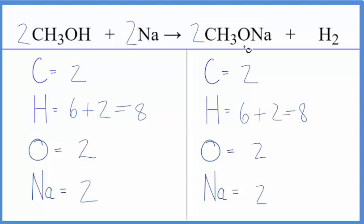The key here, we had this odd number of hydrogens. We put a two in front of this compound. That gave us an even number, and it made it possible to balance the equation. This is Dr. B with the balanced equation for CH3OH plus Na. Thanks for watching.